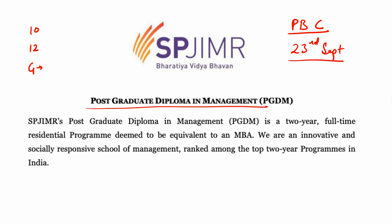When you look at the academic profile requirements, your graduation score should be around 80%, with 70% being acceptable and 65% being the worst-case scenario — below that, I would not recommend filling the form. For 12th standard, 80% or above is recommended, and for 10th standard, 80% or above as well. From my 3 years of experience, those who get calls typically have an 80-80-80 profile.